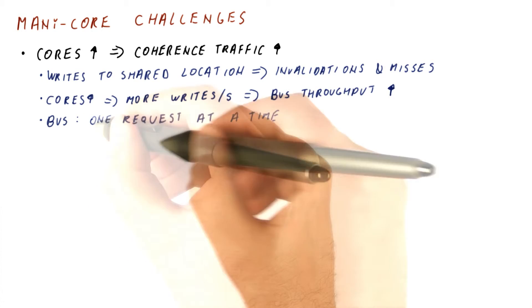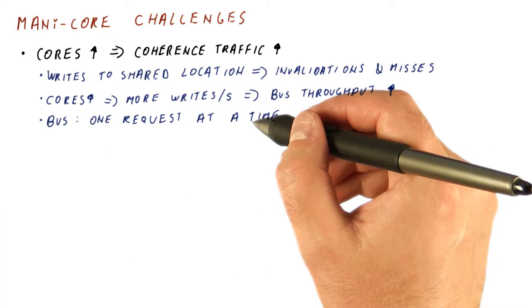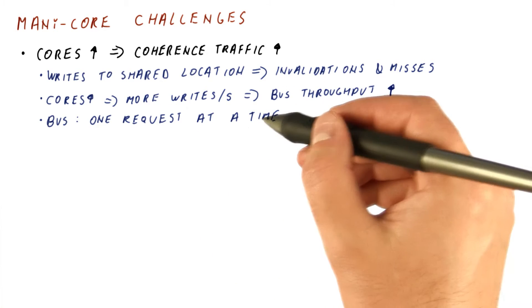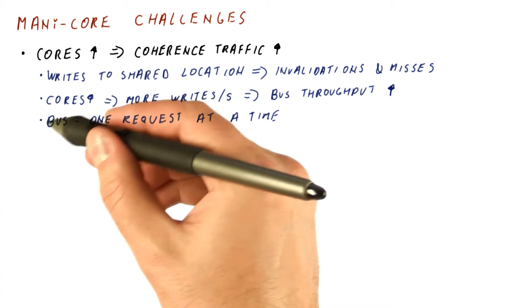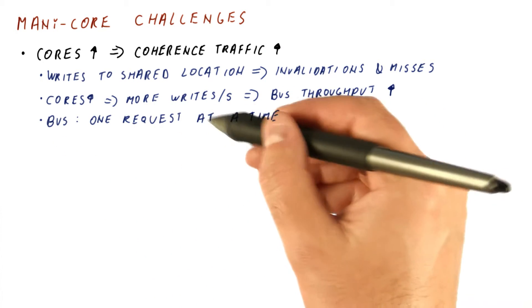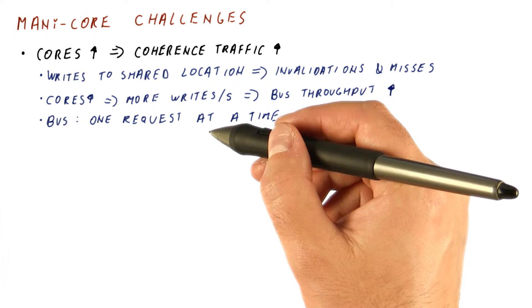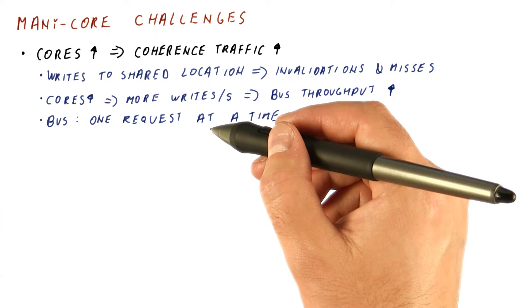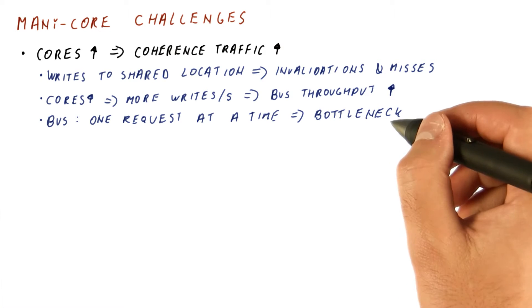Unfortunately, the bus allows us to only do one request at a time. In part, that is needed because we rely on the bus to produce the easy ordering that we get between writes to maintain coherence. But that means that really the bus eventually becomes the bottleneck.